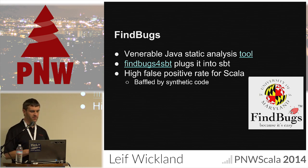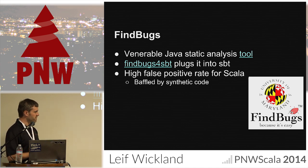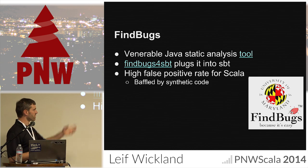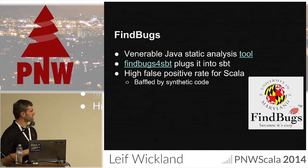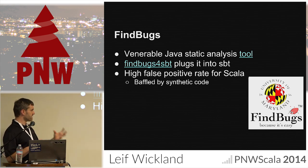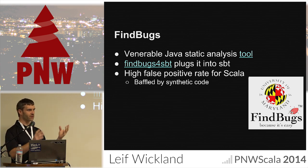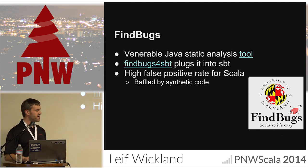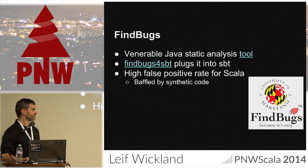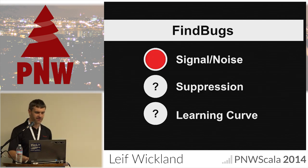There are other things in the ecosystem we can use to check stuff. There's FindBugs, which came out of the University of Maryland and was intended for Java. Somebody made an SBT plug-in for it, but you quickly find out it's almost completely useless for Scala, because all the lambdas and closures generate variables that confuse it and synthetic code with mangled names comes pouring out. Signal-to-noise: just stop right there.